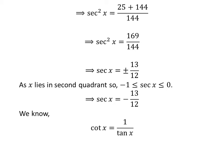We know the reciprocal of tangent of x is cotangent of x. So cotangent of x is equal to minus 12 upon 5.